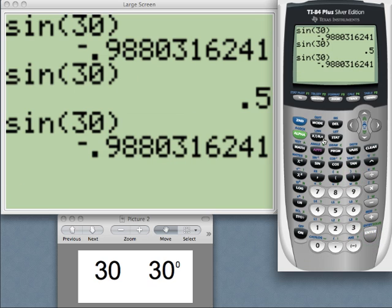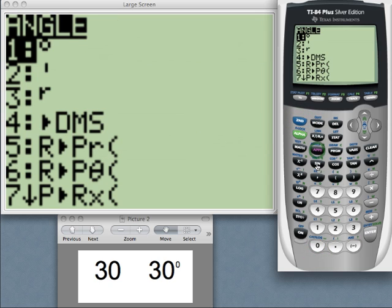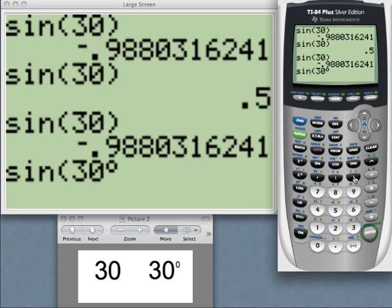Now I'm not going to switch the mode here. What I'm going to do is I'm going to hit sine 30, and before I close the parentheses, I'm going to hit second, abs, which brings up the angle menu. Now the first choice in the angle menu is the degree symbol. As soon as I enter this into my problem, now I'm telling the calculator that this is 30 degrees.